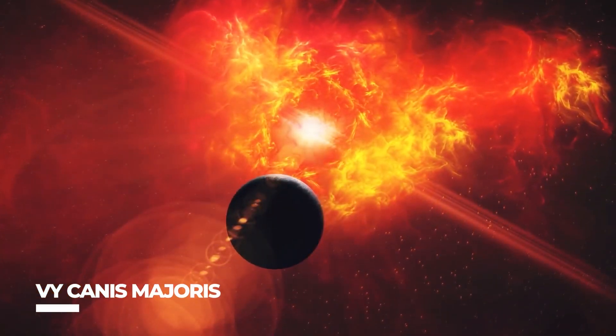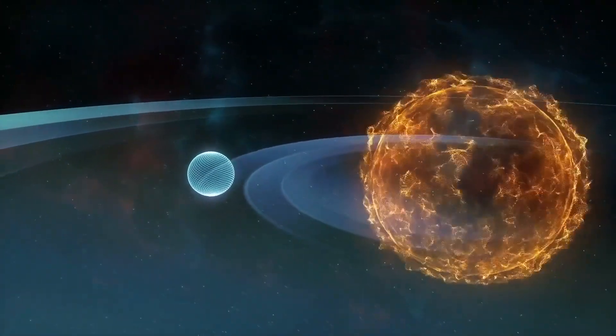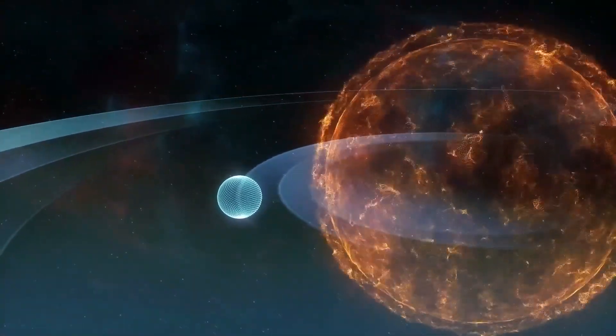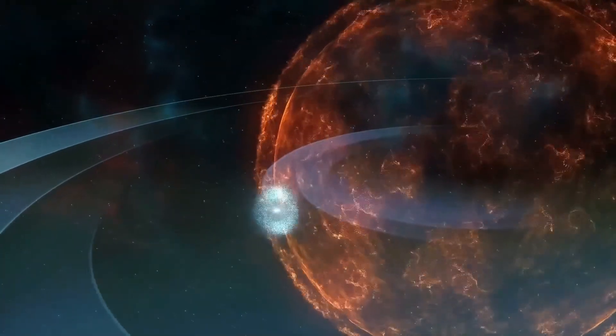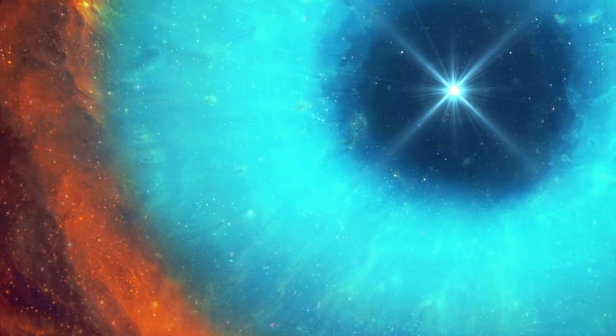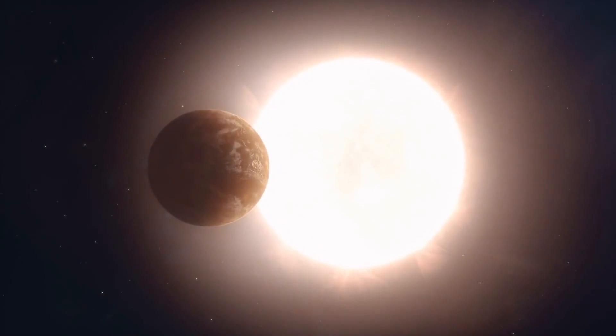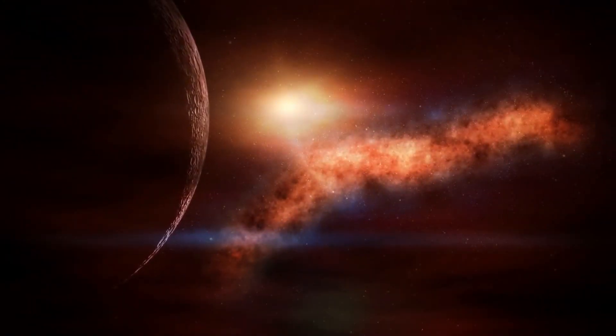Most recently, VY Canis Majoris was determined to be roughly 1,420 times wider than the sun in a 2012 study published in the journal Solar and Stellar Astrophysics. Plus, prior to current observations, the size of this red hypergiant star was thought to be 1,800 to 2,200 times that of the sun. Some publications continue to rank it as the biggest star, though.